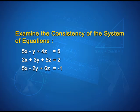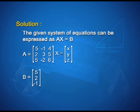Let us solve a problem involving consistency of the system of equations. Examine the consistency of the system: 5x - y + 4z = 5, 2x + 3y + 5z = 2, 5x - 2y + 6z = -1. The given system can be expressed as AX = B, where A = [5, -1, 4; 2, 3, 5; 5, -2, 6], X = [x, y, z] and B = [5, 2, -1].